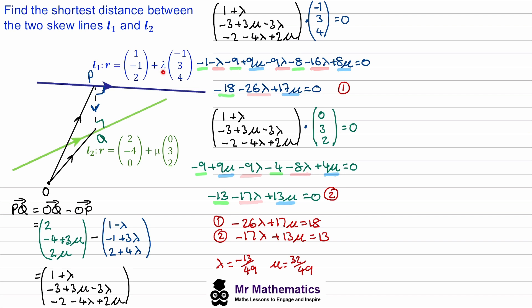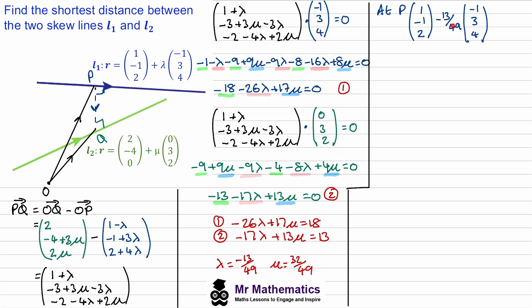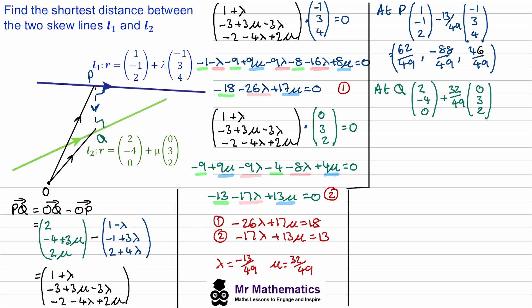Solving on our calculators, we get λ = −13/49 and μ = 32/49. We substitute each of these into their respective equations. At P, we substitute λ into the equation for line L1: x = 1 + λ, y = −1 − 3λ, z = 2 − 4λ — these give us the coordinates of point P. For Q, we substitute μ into the equation for line L2 and work out the x, y, and z values to get the coordinates of Q.